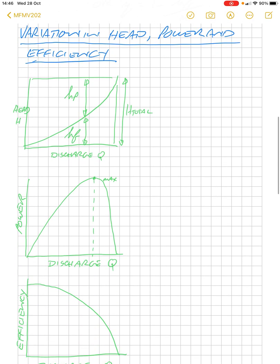Looking at power, head, and efficiency in terms of graphs, the first graph, we have the vertical axis head, and we have discharge along the horizontal axis. And we can see that as we have an increasing discharge,